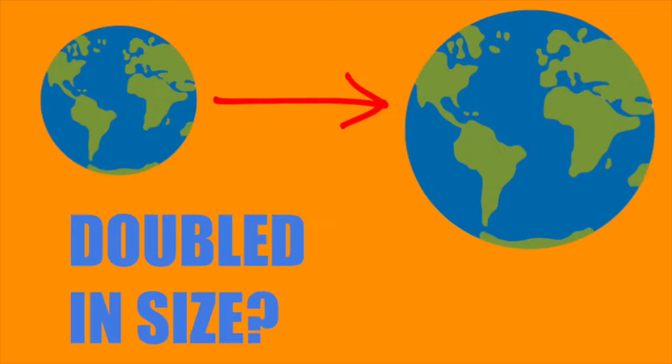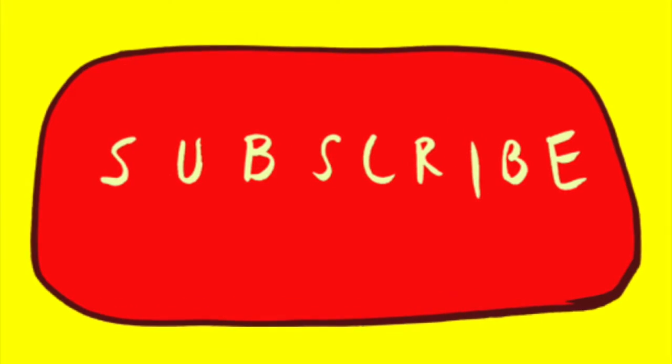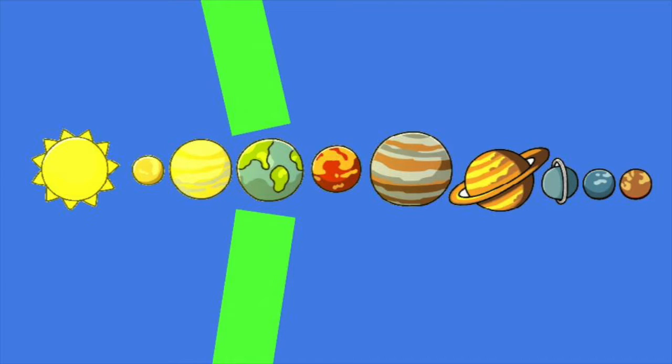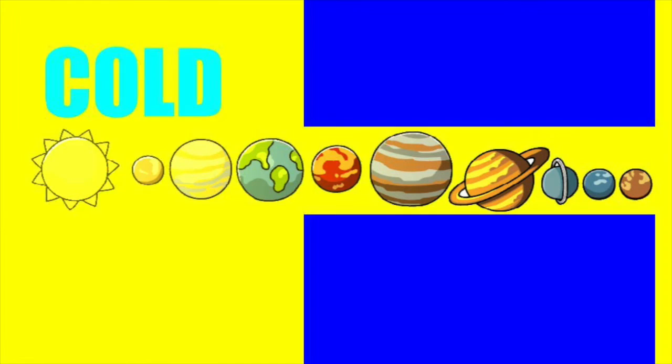Hi guys, Epic21 here, and today we're going to be talking about what would happen if Earth doubled in size. Don't forget to subscribe! So let's get started. We live in part of the solar system called the Goldilocks zone, where it's not too hot and not too cold.